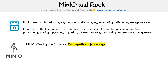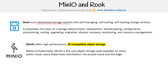MinIO is a lot more clear to me in terms of its use case. It offers high-performance S3-compatible object storage — it essentially works just like S3. It's native Kubernetes, and MinIO is the only object storage suite available in every public cloud — basically anywhere you can deploy Kubernetes, you can use it. MinIO is software-defined and 100% open source under the AGPL version 3. I really like the idea of MinIO since I really like S3, so it's an easy sell for me.